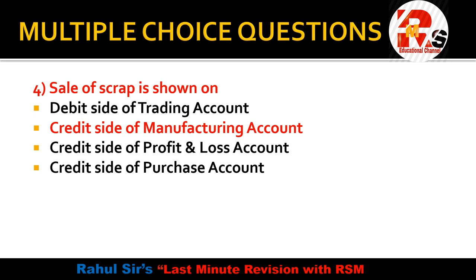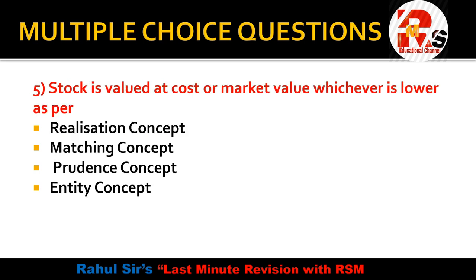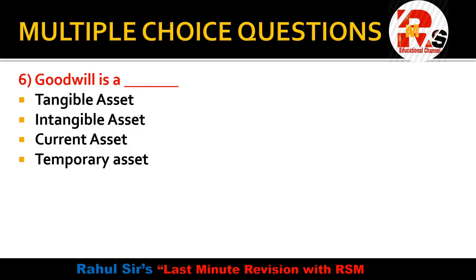Question five is on closing stock. This is a simple concept — stock is valued at cost or market value, whichever is lower. The options are: realization concept, matching concept, prudence concept, and entity concept. Stock is valued at cost or market price whichever is lower, and this is based on the realization concept. So the right answer is realization concept.